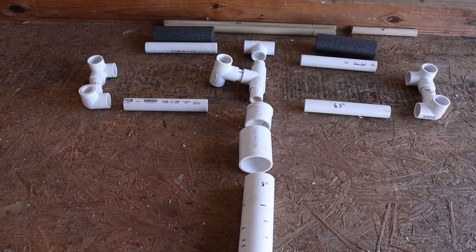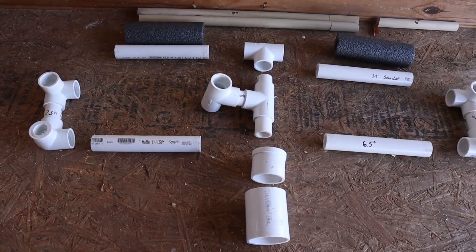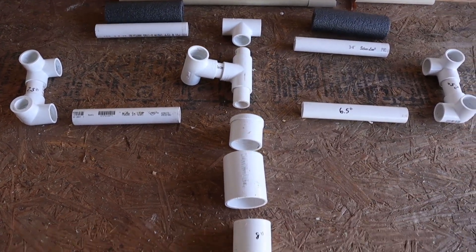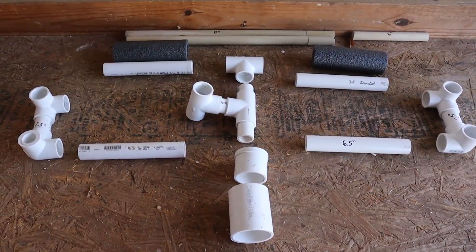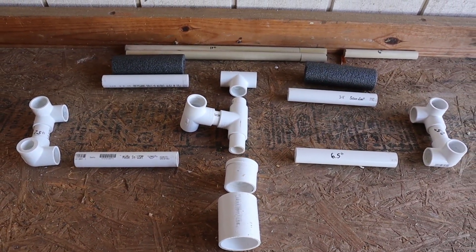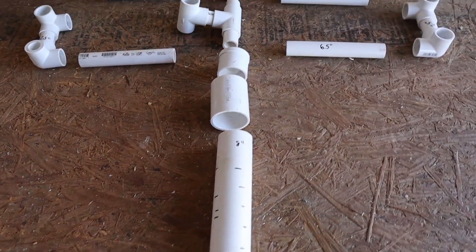Alright, so here's an exploded view of everything I'm using. The PVC is three quarter inch and one and a quarter inch. The three quarter inch I'm using because I just had some spare stuff laying around and then let me show you why I'm using the one and a quarter inch for the bottom.